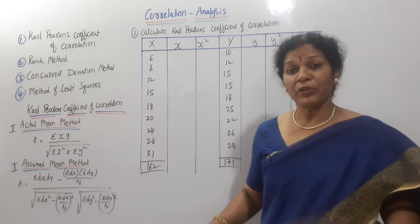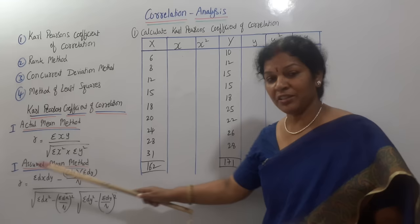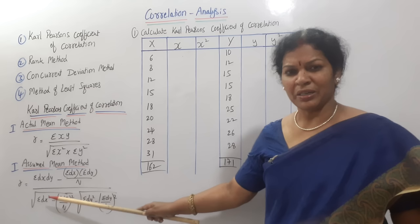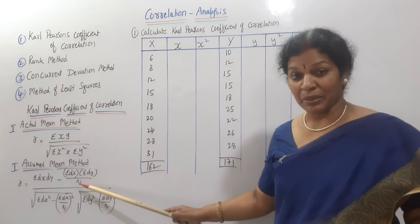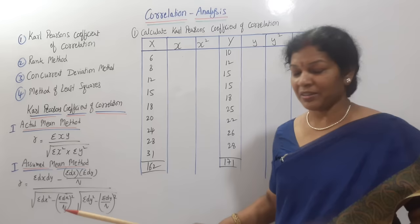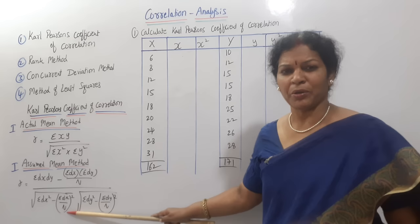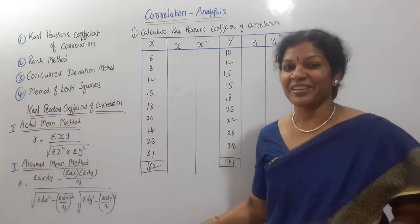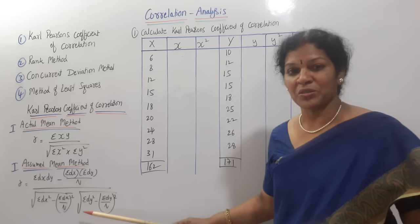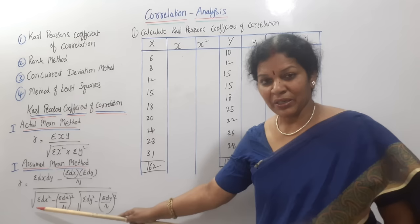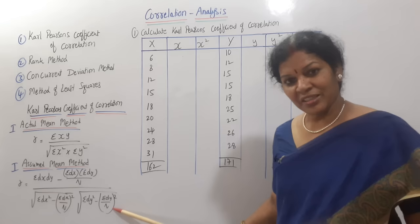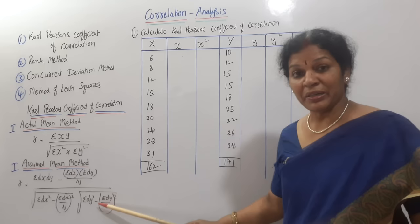If you go for the assume mean method, the formula is lengthy but easy to remember. r equals sigma(dx·dy) minus (sigma dx × sigma dy)/n, all divided by the square root of [sigma dx-squared minus (sigma dx / n) whole squared] into [sigma dy-squared minus (sigma dy / n) whole squared]. This is almost just like the standard deviation formula.